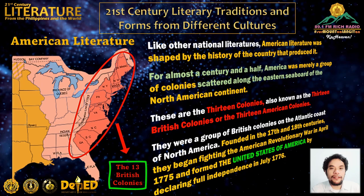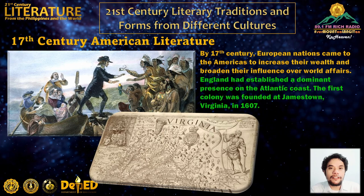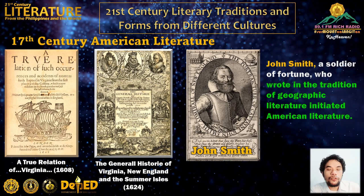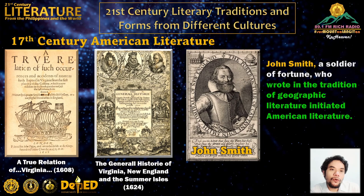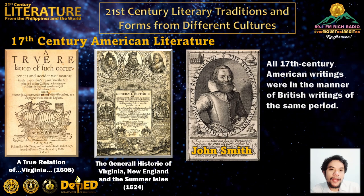The history of American literature begins with the arrival of English-speaking Europeans in the 17th century. At first, American literature was naturally colonial literature by authors who were Englishmen and who thought and wrote as such. John Smith, a soldier of fortune who wrote in the tradition of geographic literature, initiated American literature. His chief books included A True Relation of Virginia in 1608 and The General History of Virginia, New England, and The Summer Isles in 1624. All 17th century American writings were in the manner of British writings of the same period.